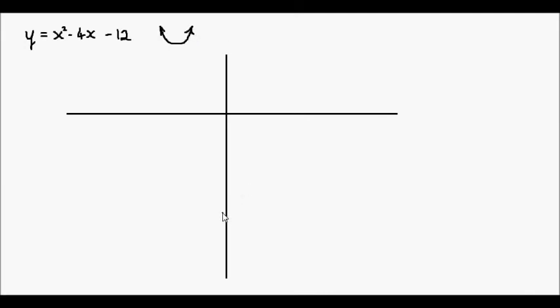We know it crosses the y-axis at negative 12. I'm not going to be too particular with drawing things to scale here, this is just a sketch. We know it crosses the x-axis at negative 2 and positive 6. We know our vertex or turning point is at 2 and negative 16. So approximately at this point. So now it's a matter of just using our artistic skills to join all of these points together.